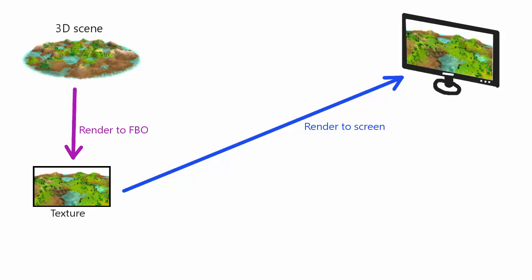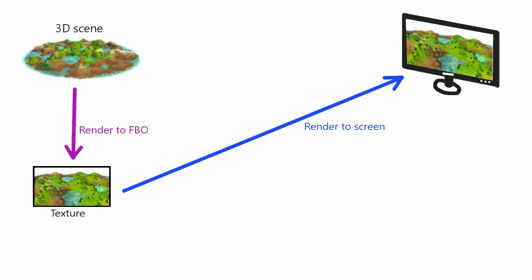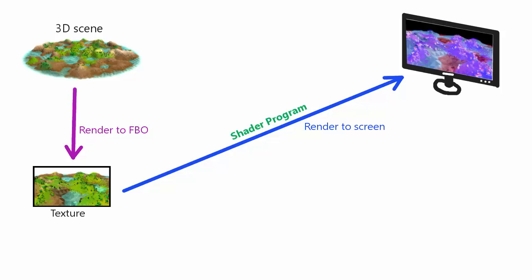At this stage all of this seems pretty pointless — the game will still look exactly as it did before, and we might as well have just rendered it straight to the screen rather than rendering it to a texture and then rendering that texture onto a quad. However, this now gives us the opportunity to carry out some post-processing effects on the image of the scene. When we render that textured quad onto the screen, we obviously have to use a shader program, just like we did in episode 6. The shader program determines the colour of every pixel on that quad, so instead of just setting the colour straight to the texture colour, we can do something fancier — for example, we could set the output colour to 1 minus the colour of the texture, therefore inverting all of the colours in the scene. That would be a very simple post-processing effect.